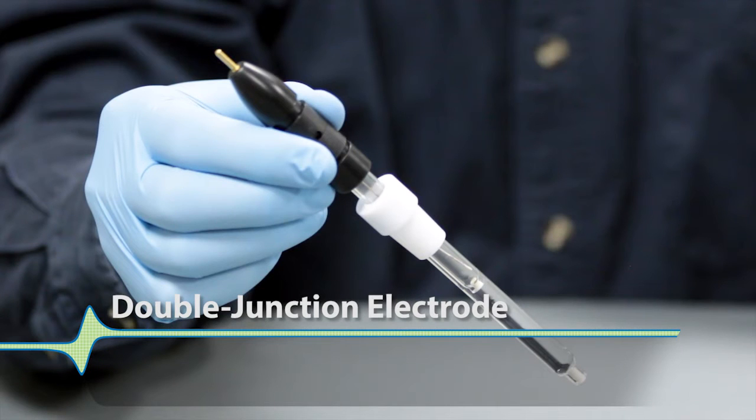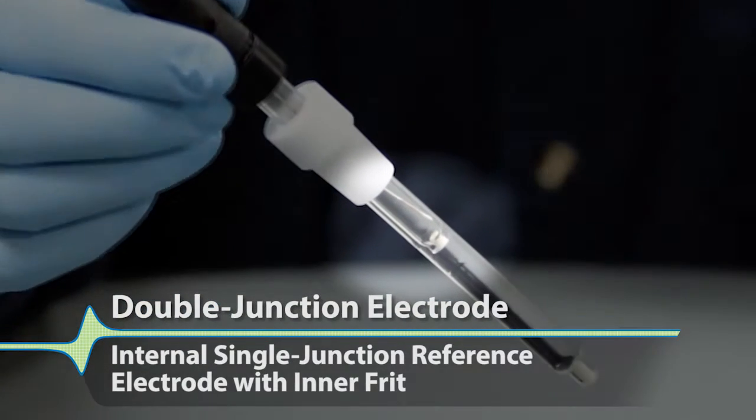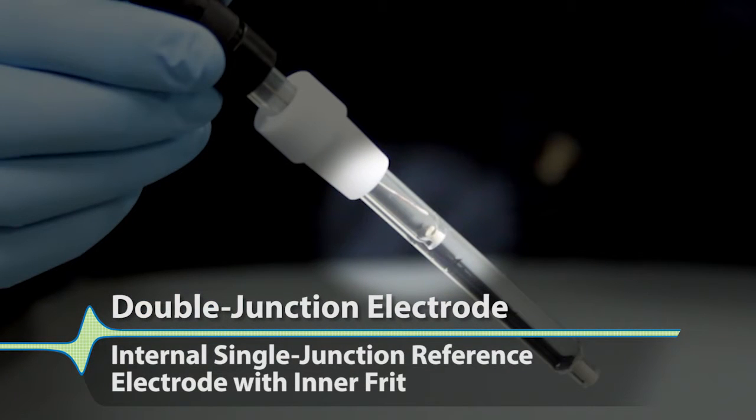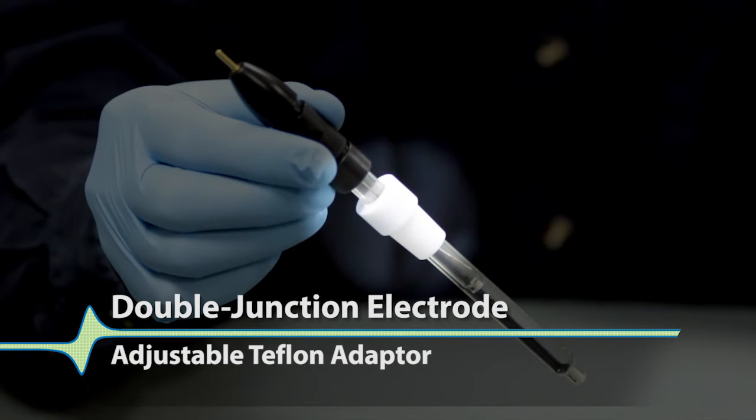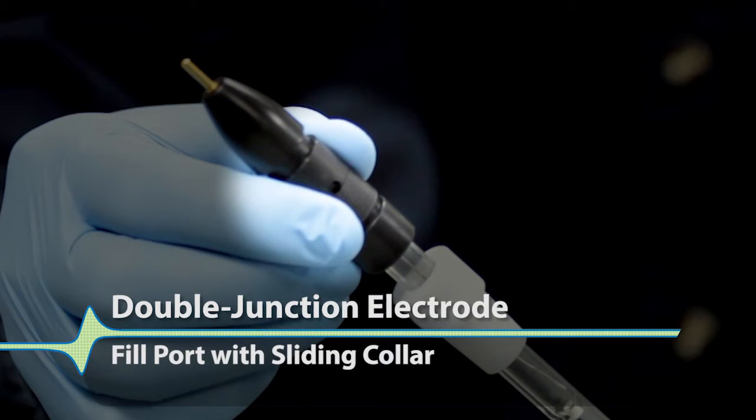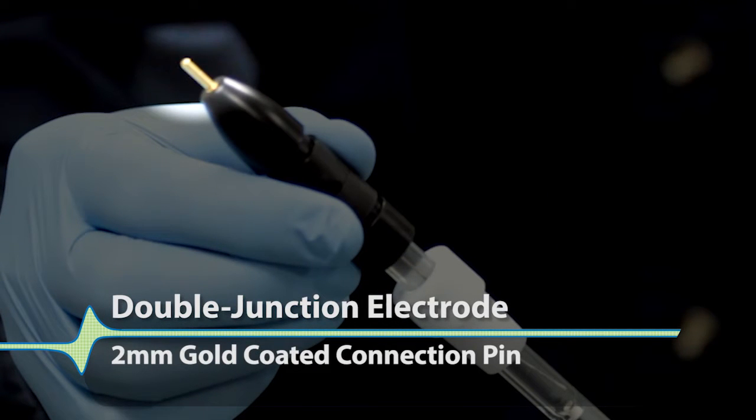If you're using a double junction electrode, you will have a small internal single junction reference electrode with an inner frit, an outer 9.5 millimeter glass body fritted tube, an adjustable Teflon adapter, a fill port with a sliding collar, and a 2 millimeter diameter gold-coated connection pin.